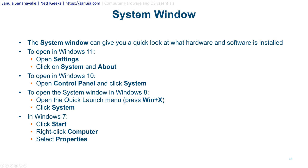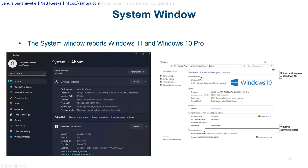System Window. The System Window gives you a quick look at the hardware and software installed. To open it in Windows 11: open Settings → System → About. In Windows 10: Control Panel → System. In Windows 8: open the quick launch menu (Windows + X) → System. In Windows 7: Start → right-click Computer → Properties. The System Window in Windows 11 is under Settings → System → About, and in Windows 10 it shows under Control Panel → System.